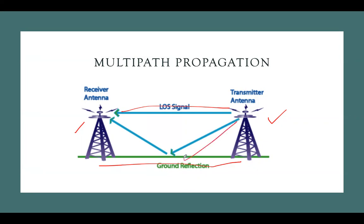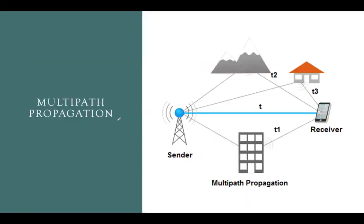When the transmitter and the receiver are a bit far apart, the signal does not reach the receiver directly. Rather, it gets reflected by the ground and then reaches the receiver. This is called ground wave reflected propagation.